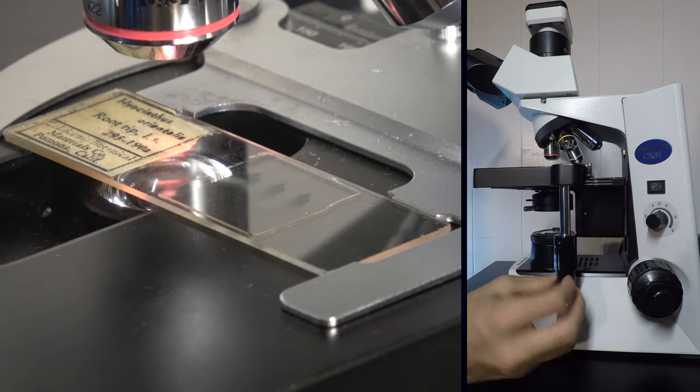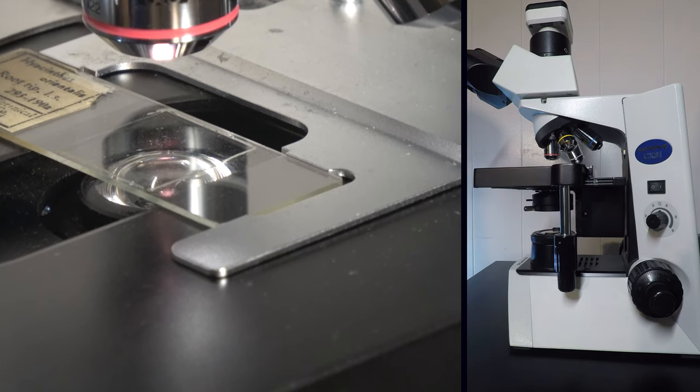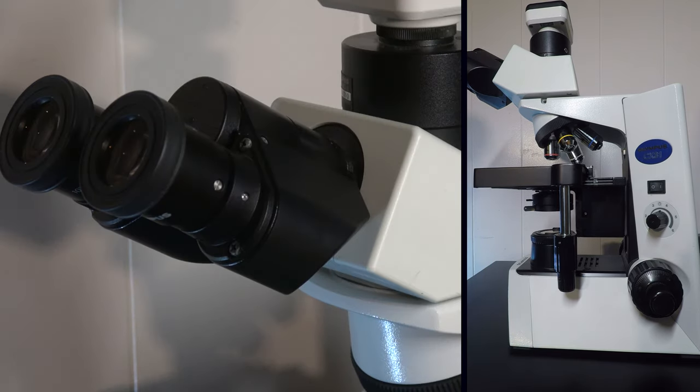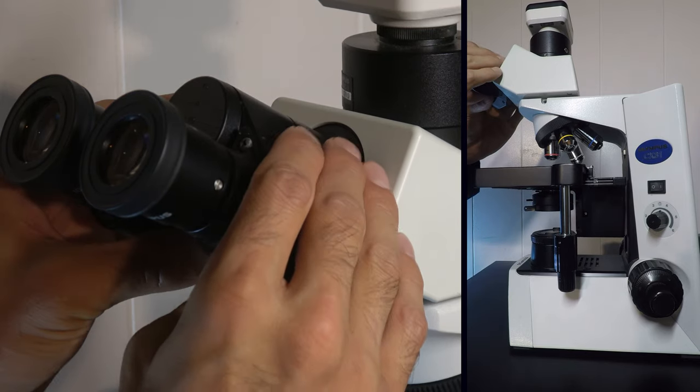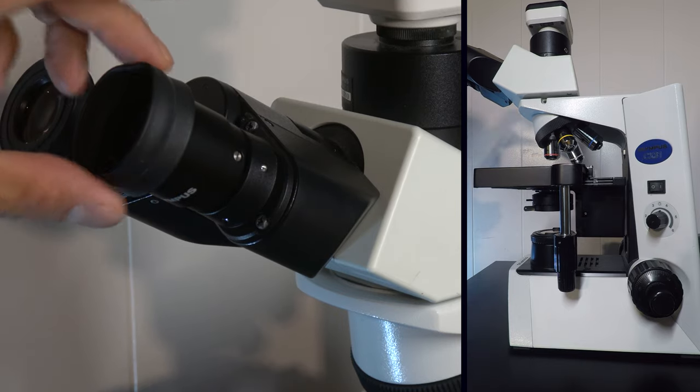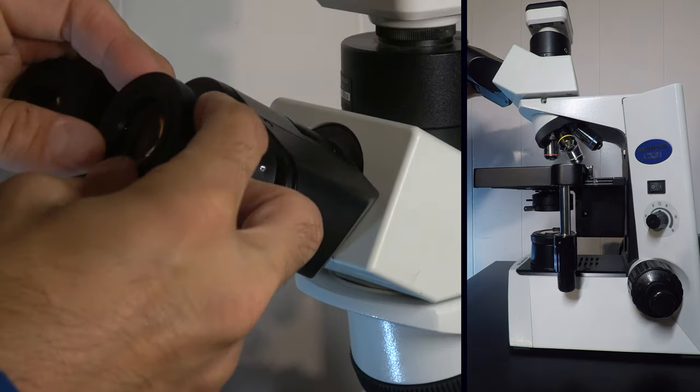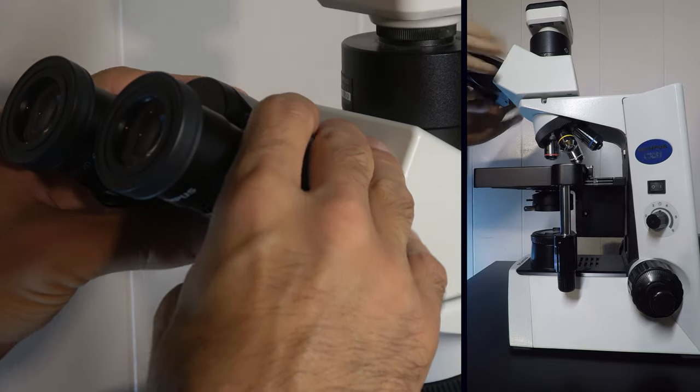Before looking through the eyepieces, use the stage controls to move the slide sample so that the beam of light passes directly through it. Now look through the eyepieces and use the diopter adjustment to match the distance between your pupils so that you can utilize both oculars. You can optionally fold out the rubber eye cups for increased comfort or to block environmental light.